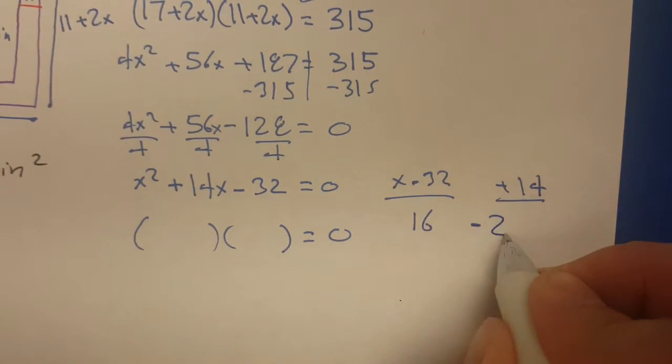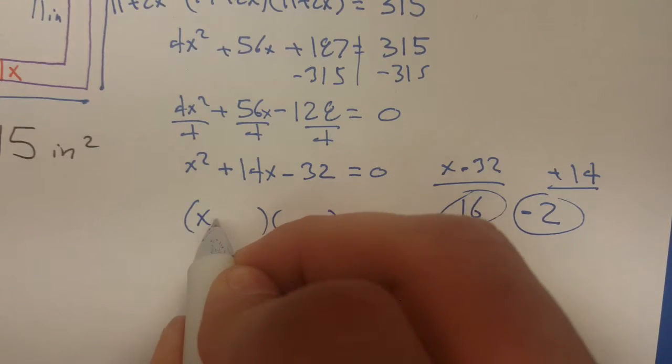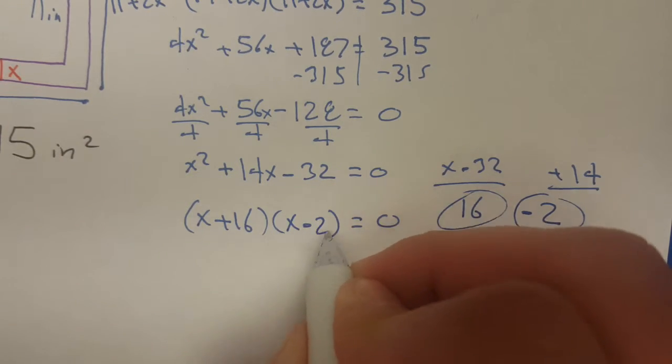I think a positive 16 and a negative 2 are going to be my magic numbers. So my binomials would be x plus 16 times x minus 2.